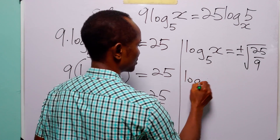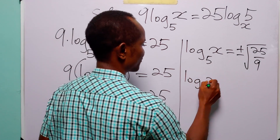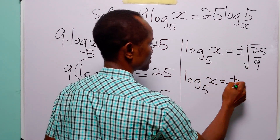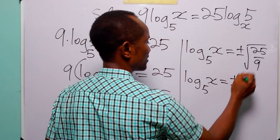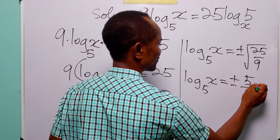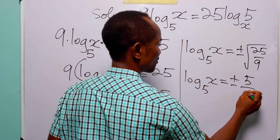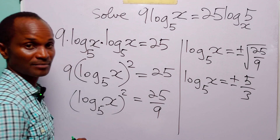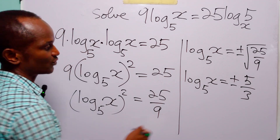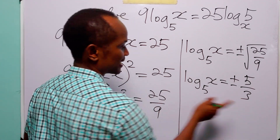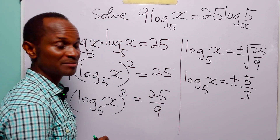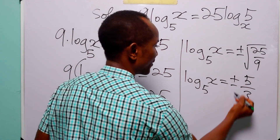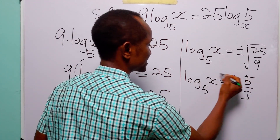So log to base 5 of x is equal to ±5/3, since the square root of 25 is 5 and the square root of 9 is 3. And of course, when you have a statement like this, it simply means that 5 to the power of this is equal to x.